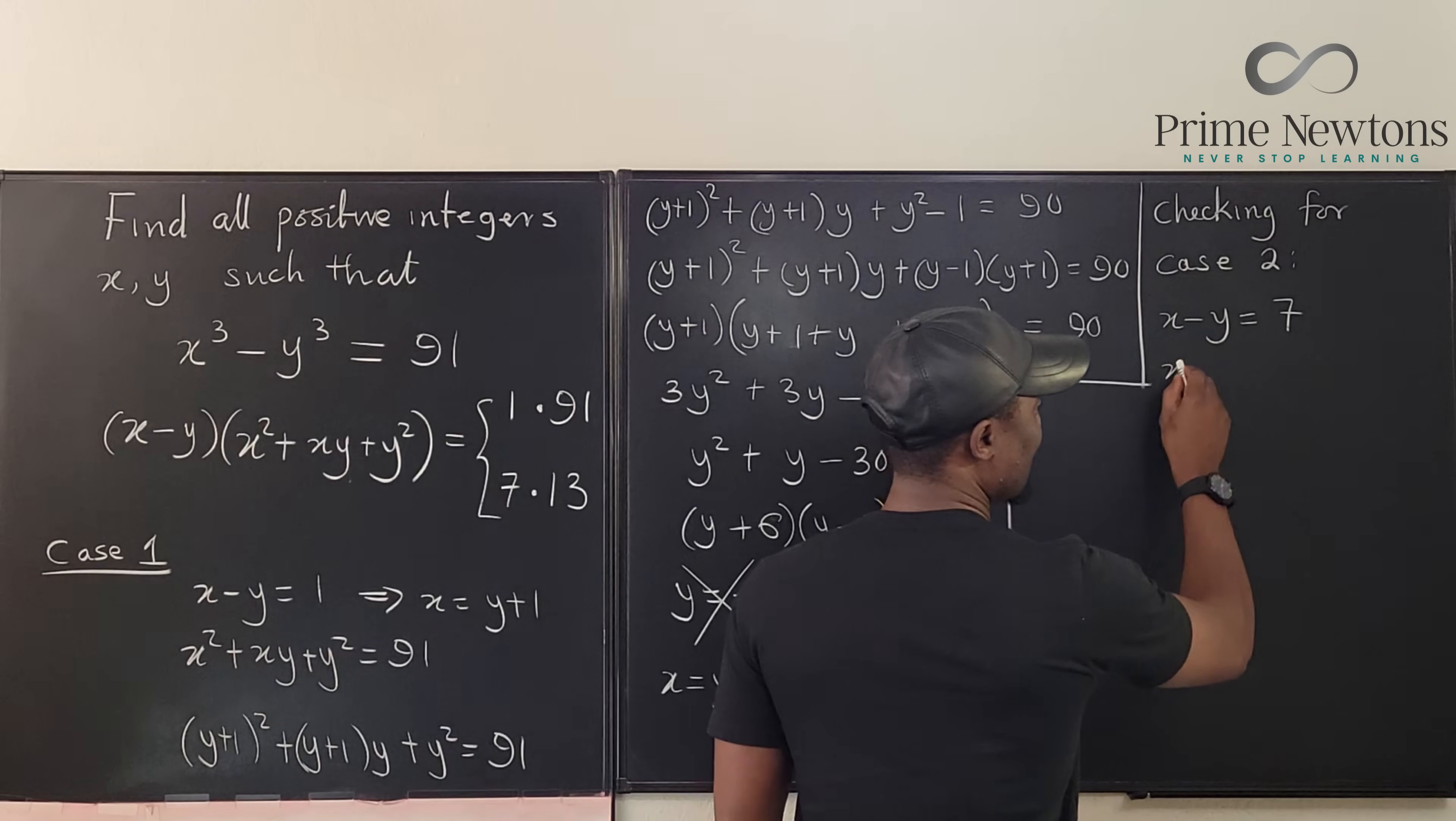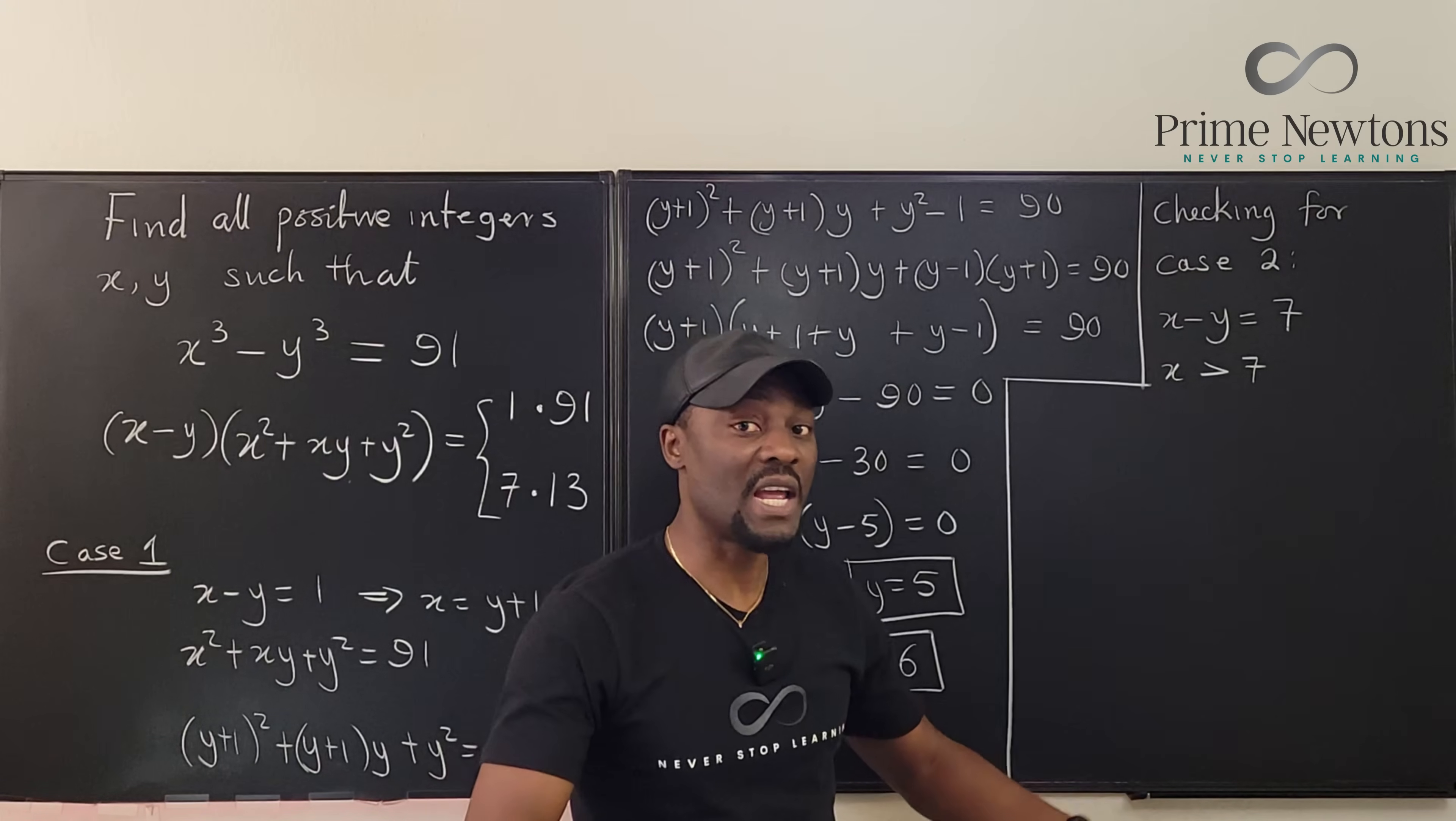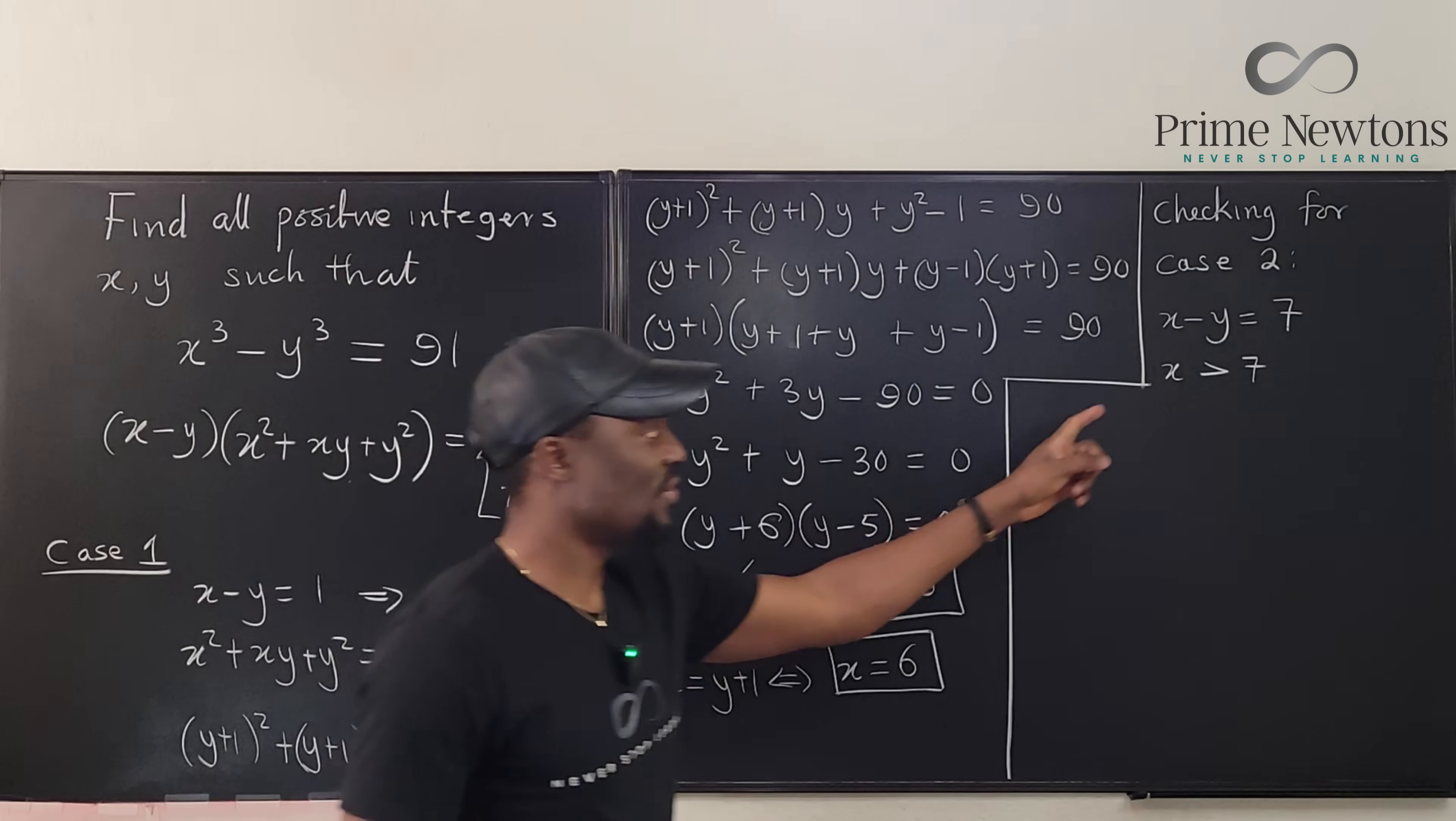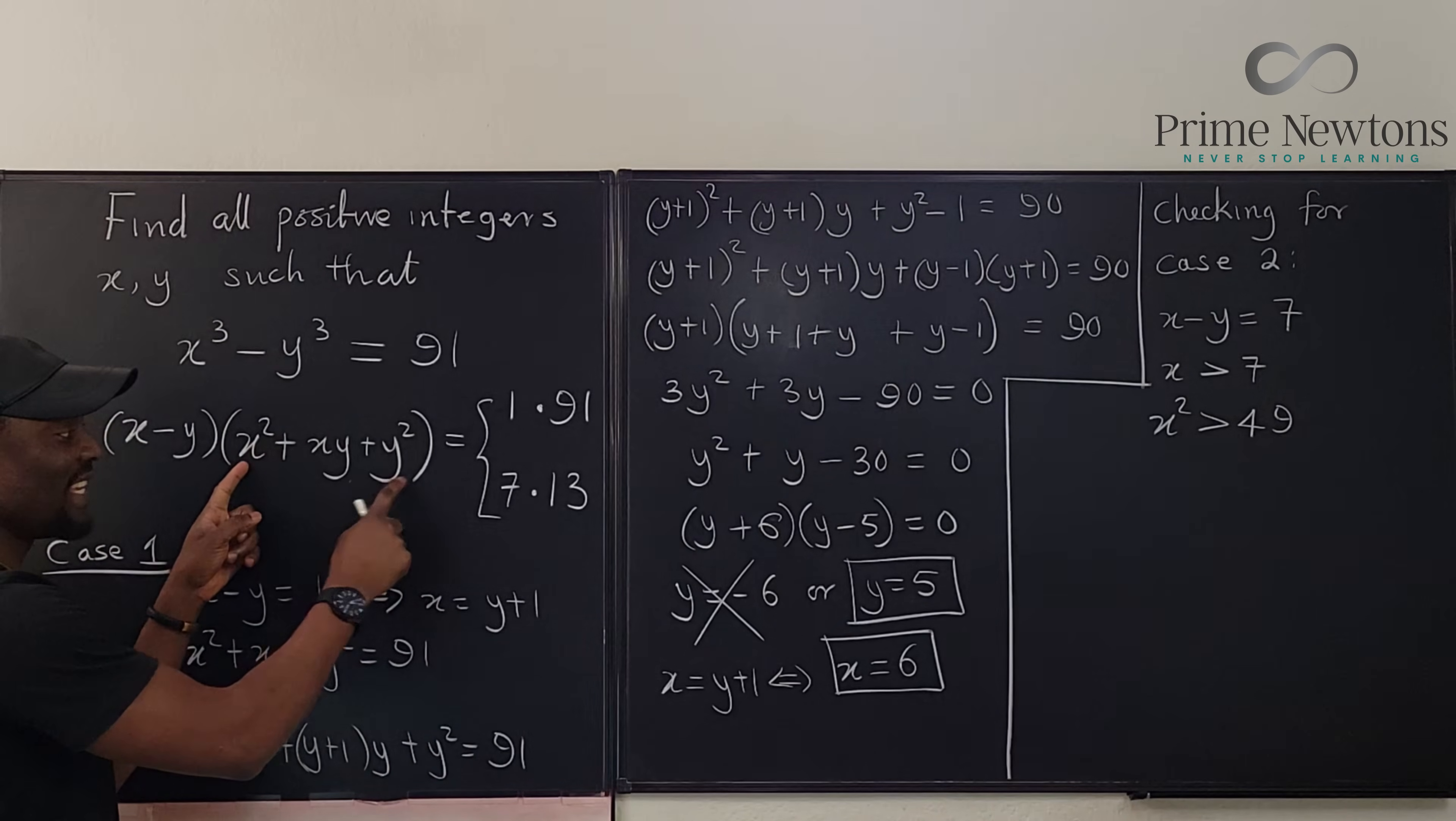Remember, y is not 0. So if x is greater than 7, then x must be 8 or 9 or 10. In fact, it's already a problem because look, it's 7 and 13. So if x is greater than 7, then x squared is greater than 49.